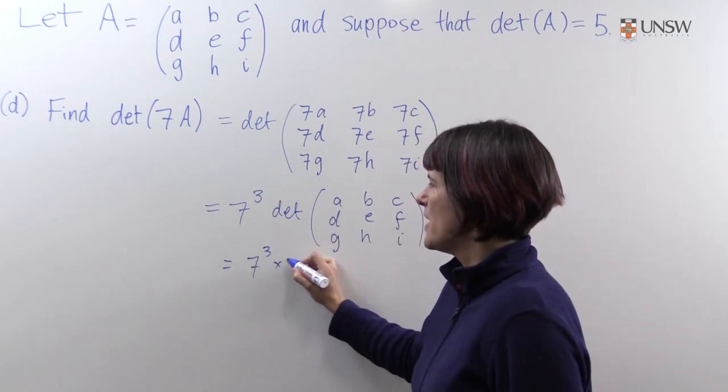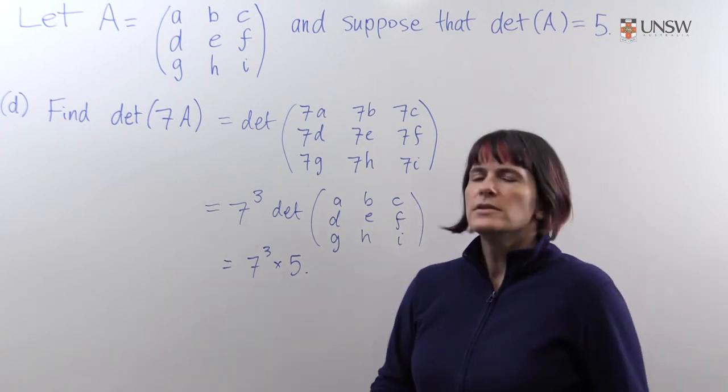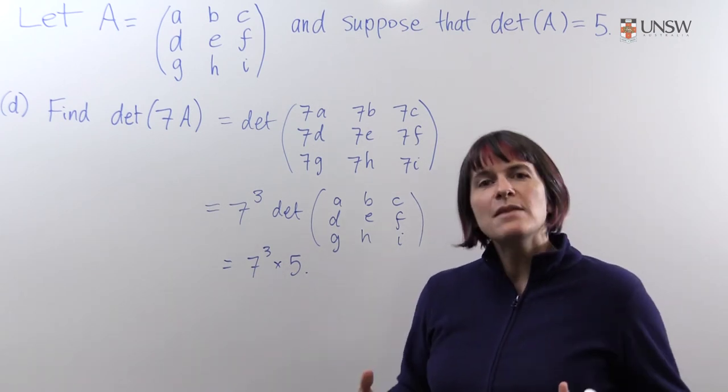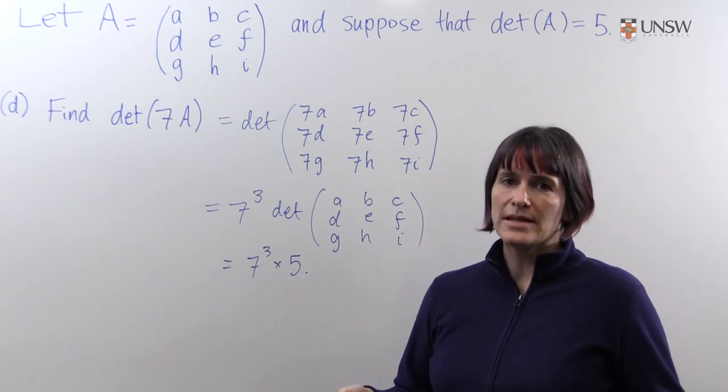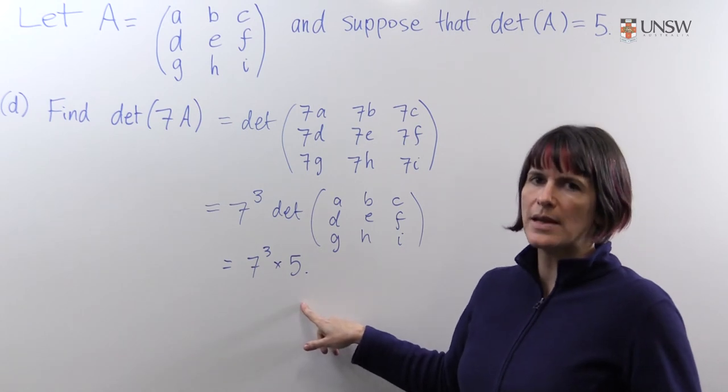So it's seven cubed times five. I don't actually know what number that is, but you could look that up. So the point is, if you have an n by n matrix and you multiply it by a scalar, you'll get that scalar raised to the nth power times the determinant of the matrix.